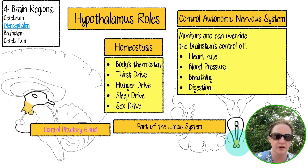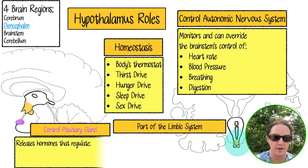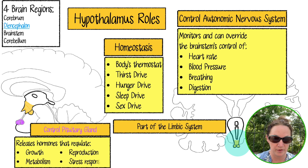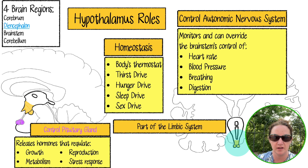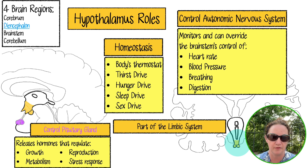Controlling the pituitary gland: this cute little gland hangs down off the bottom of the hypothalamus. It releases a whole bunch of hormones related to growth, metabolism, reproduction, and stress response. The hypothalamus releases hormones that regulate the pituitary gland, and then the pituitary gland releases all of these hormones that regulate many other aspects of your body.